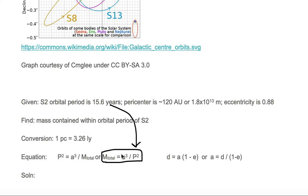So the only thing we need to find is a. We do not know a, but we know we can get it from the eccentricity equation once we know d and e. The eccentricity we already know is 0.88 and d is our pericenter distance of around 120 AU.